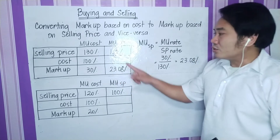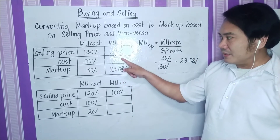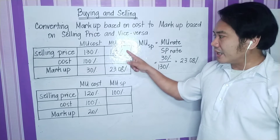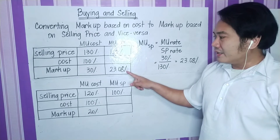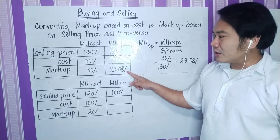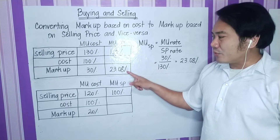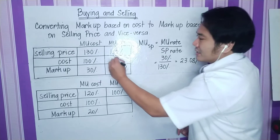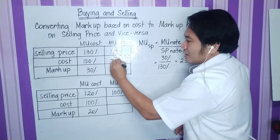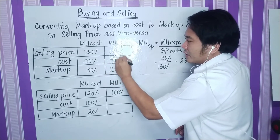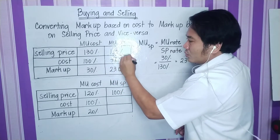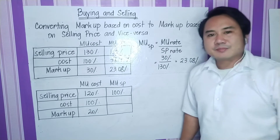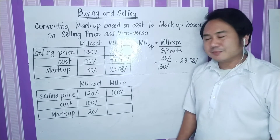To solve for the cost percentage, we subtract 23.08% from 100%, which gives us 76.92%.